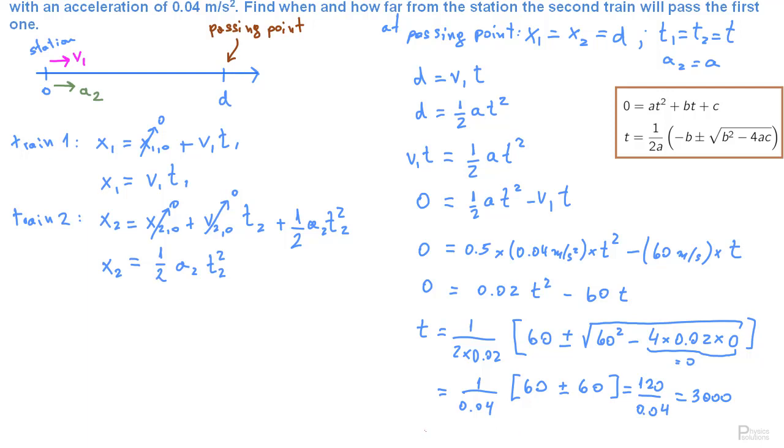This means that the time is 3000 seconds. There we have it. That is the solution for the time. So 3000 seconds is the time that it takes for the speeding train to pass the first train. So this is the answer to the first part, the one.